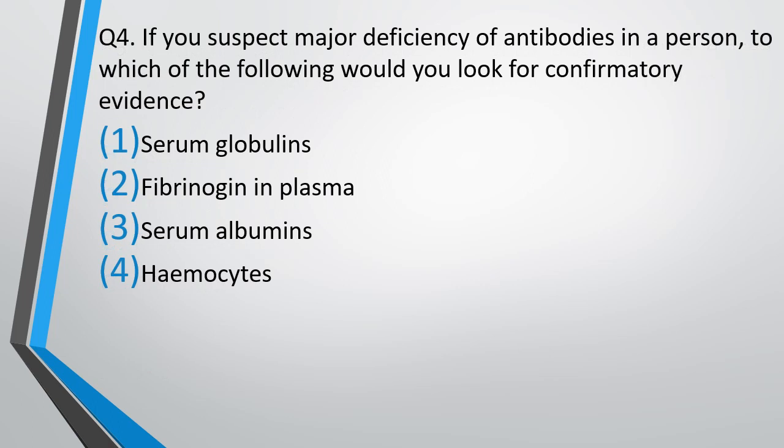Question No. 4. If you suspect a major deficiency of antibodies in a person, which of the following would you look to confirm the evidence? Options: serum globulin, fibrinogen in plasma, serum albumin, or hemocytes. The correct answer is option 1, serum globulins.